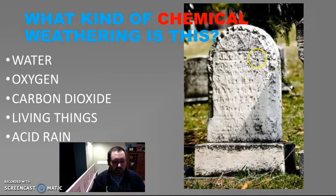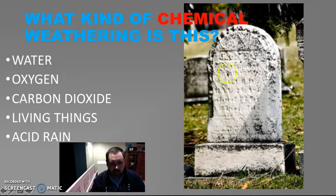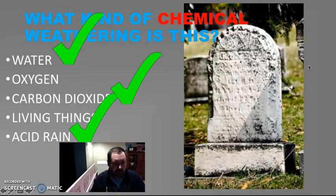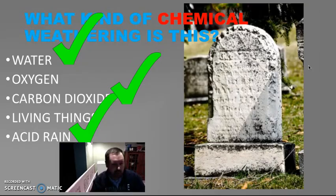We've got a tombstone here, and you can barely read — actually can't read at all — what's on the tombstone. What kind of chemical weathering is this? It's another one where several things work together: water, carbon dioxide, acid rain, and probably oxygen in there as well. There's a whole bunch of different things.